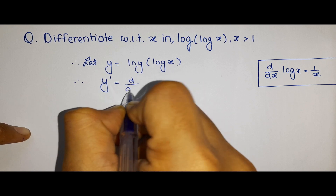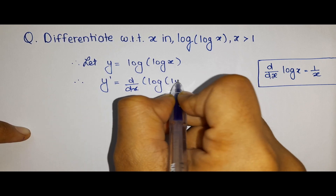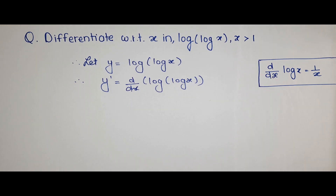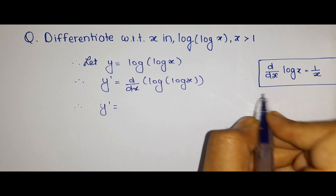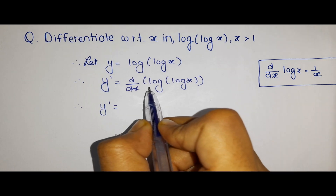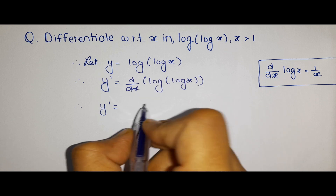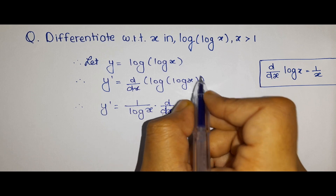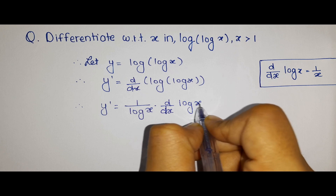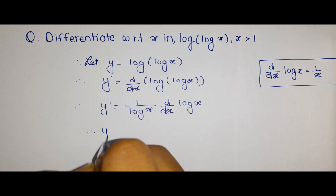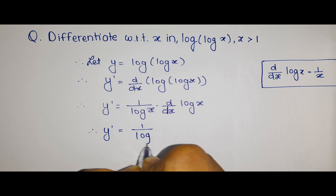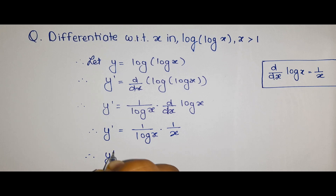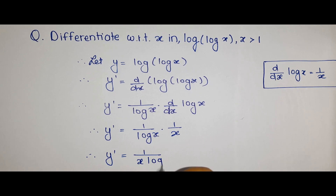So d by dx of log of log x will be 1 upon log x, multiplied by d by dx of log x by chain rule. This gives us 1 upon log x. Then d by dx of log x is 1 upon x, so the final answer will be y dash equal to 1 upon x log x.